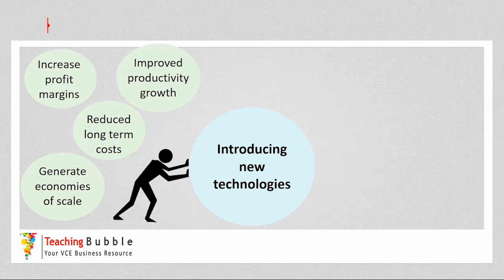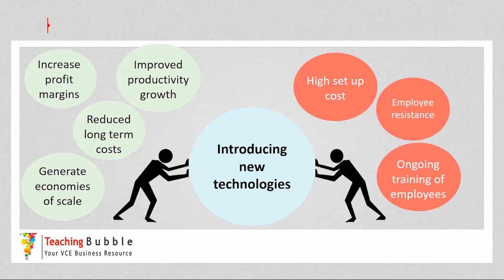Once the driving forces have been identified, the manager will then look to identify the restraining forces. These could include a high setup cost for implementing the new technologies — how powerful that restraining force is may be determined by how much available cash the business has. If the business doesn't have a lot of cash, that would be a very strong restraining force. There could also be employees resisting the technologies, nervous about their job security or their ability to learn the new technologies.